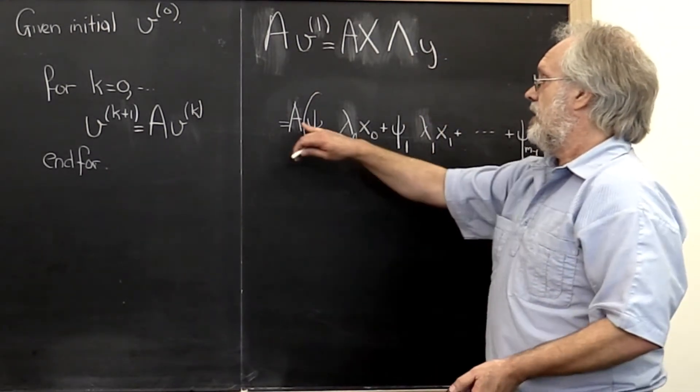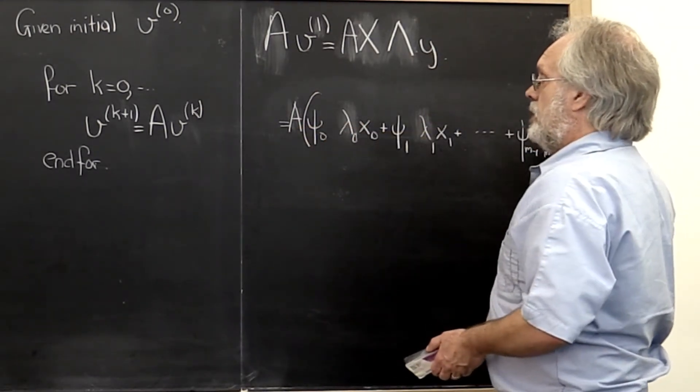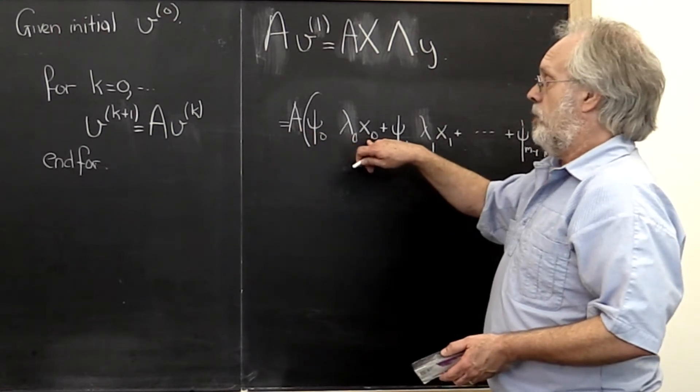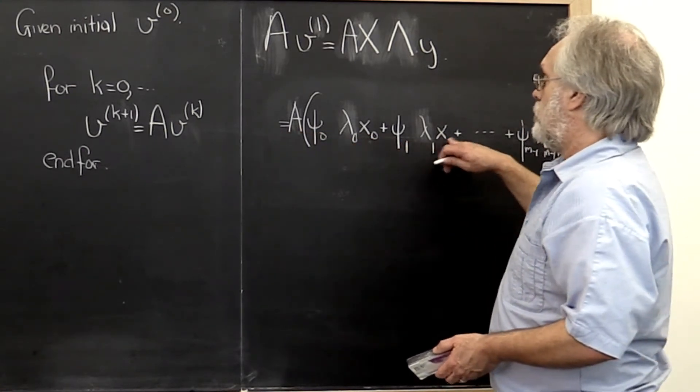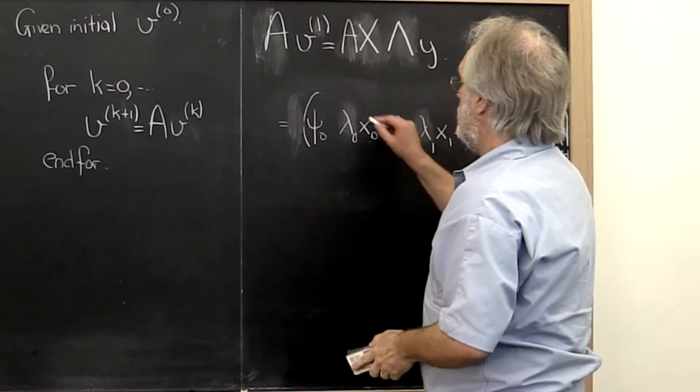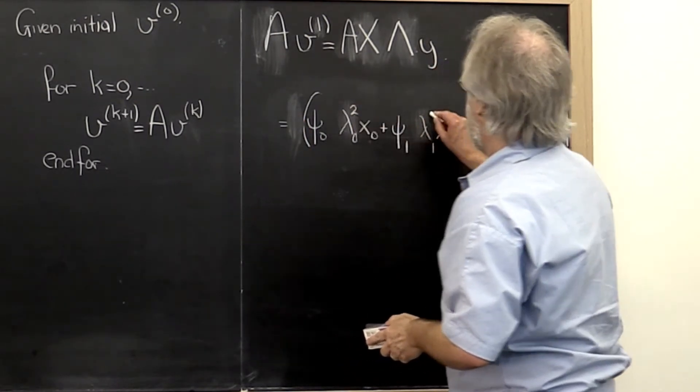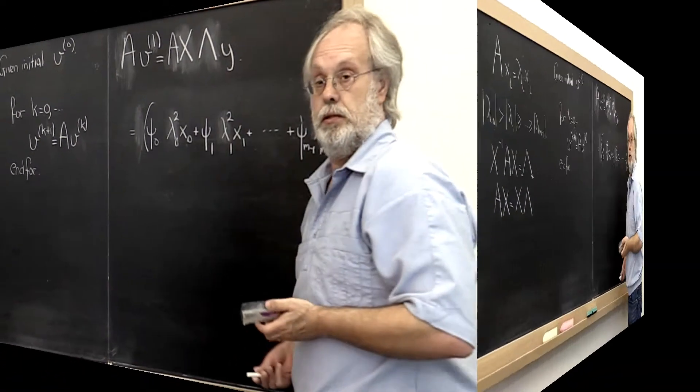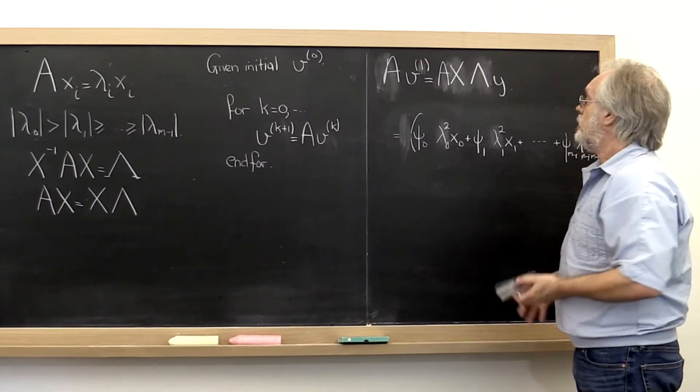And by the same argument, A then gets distributed. But that just means that A multiplies x0, x1, etc. And it's not hard to see that the net result of that is that we now square each of these.